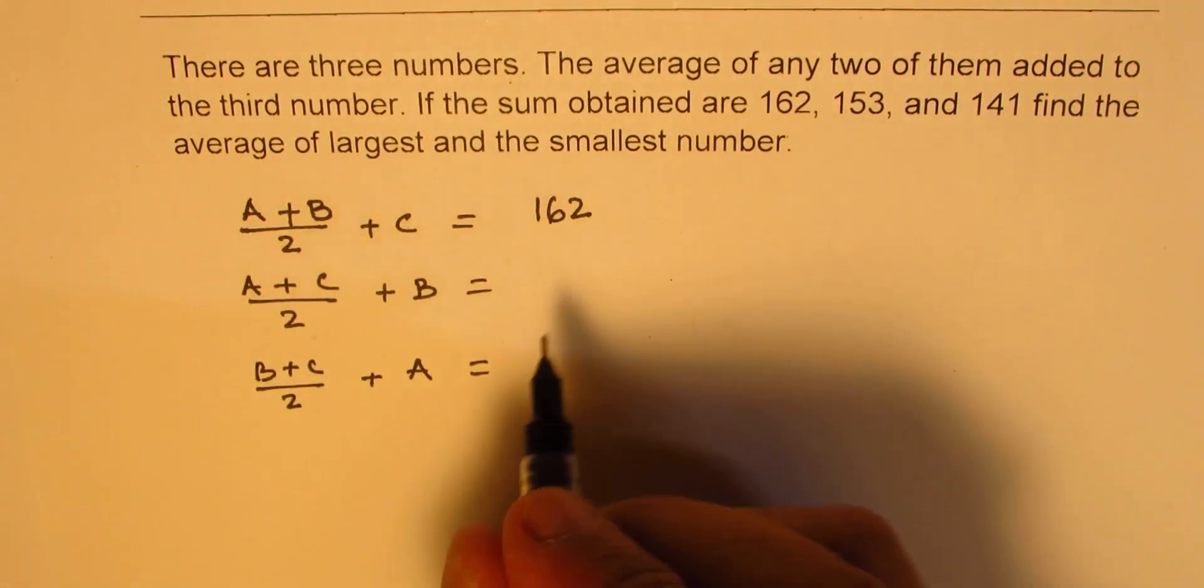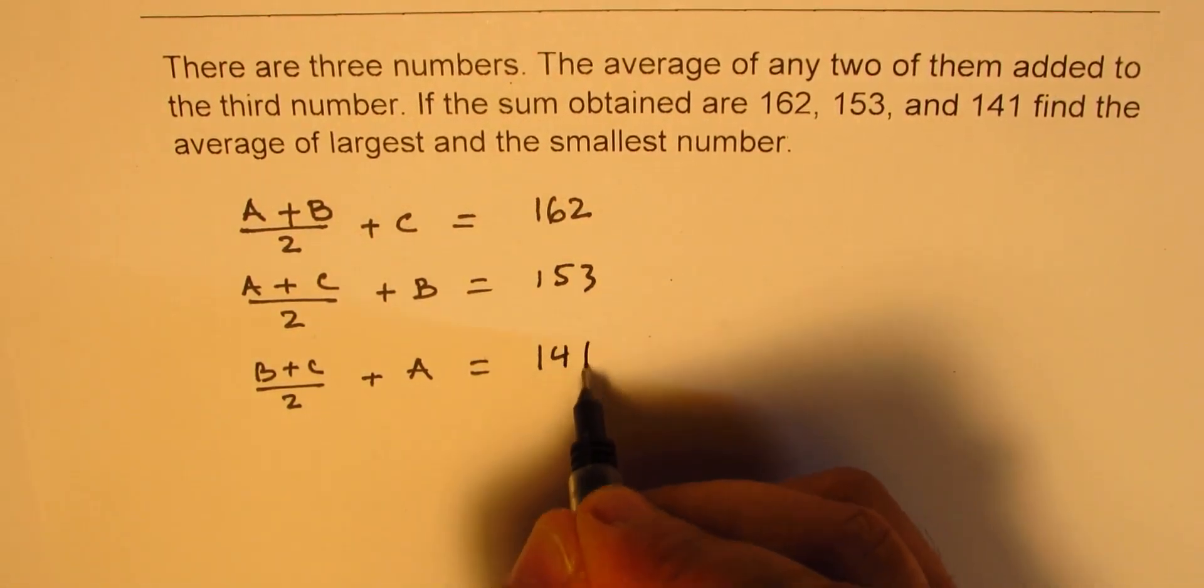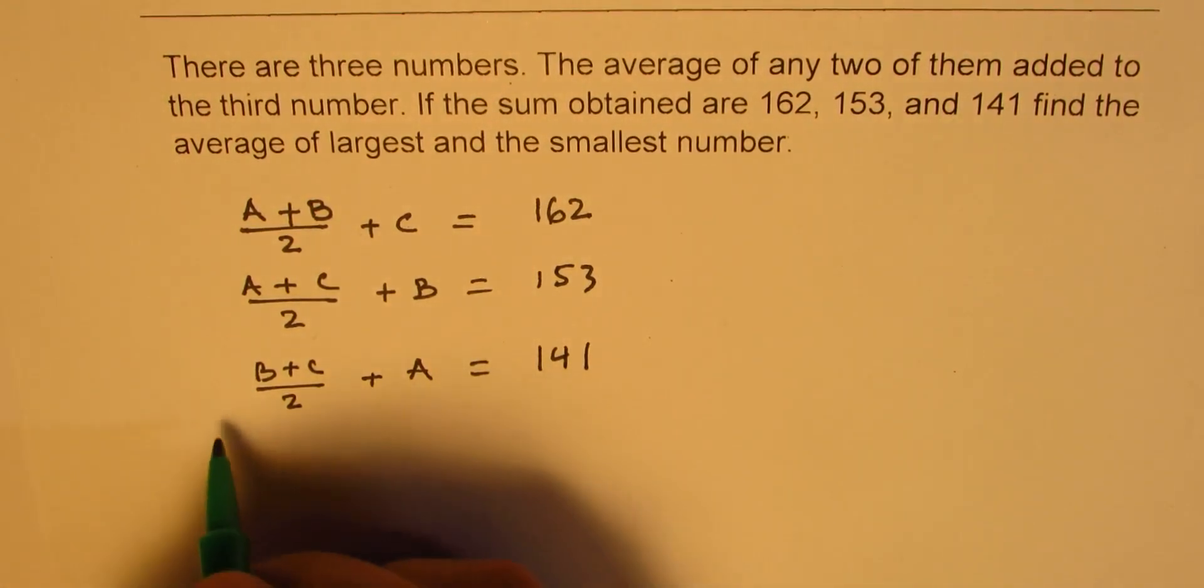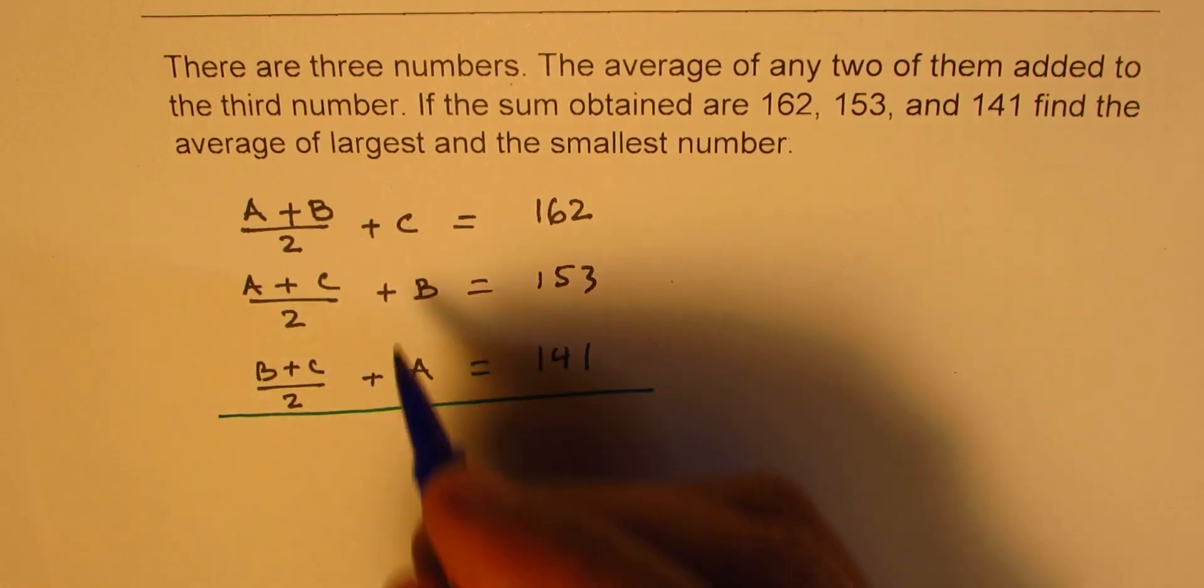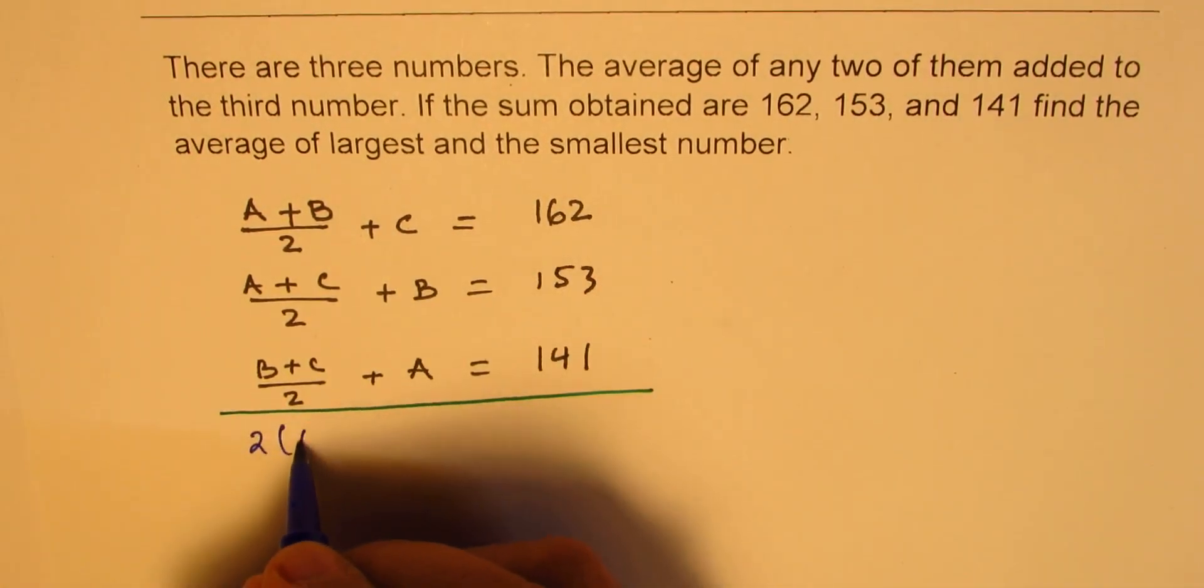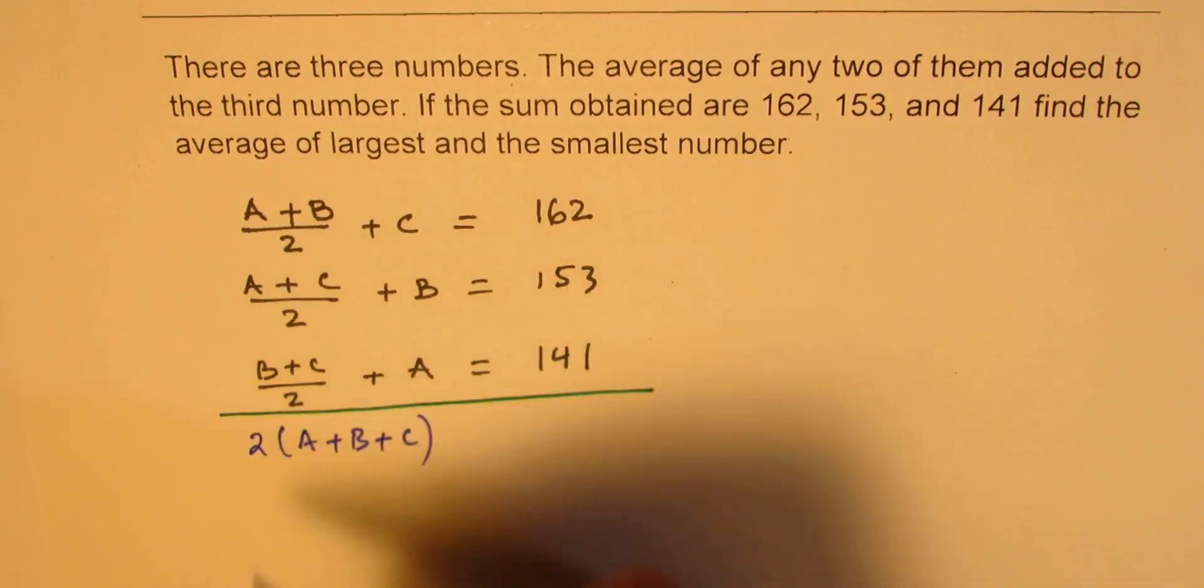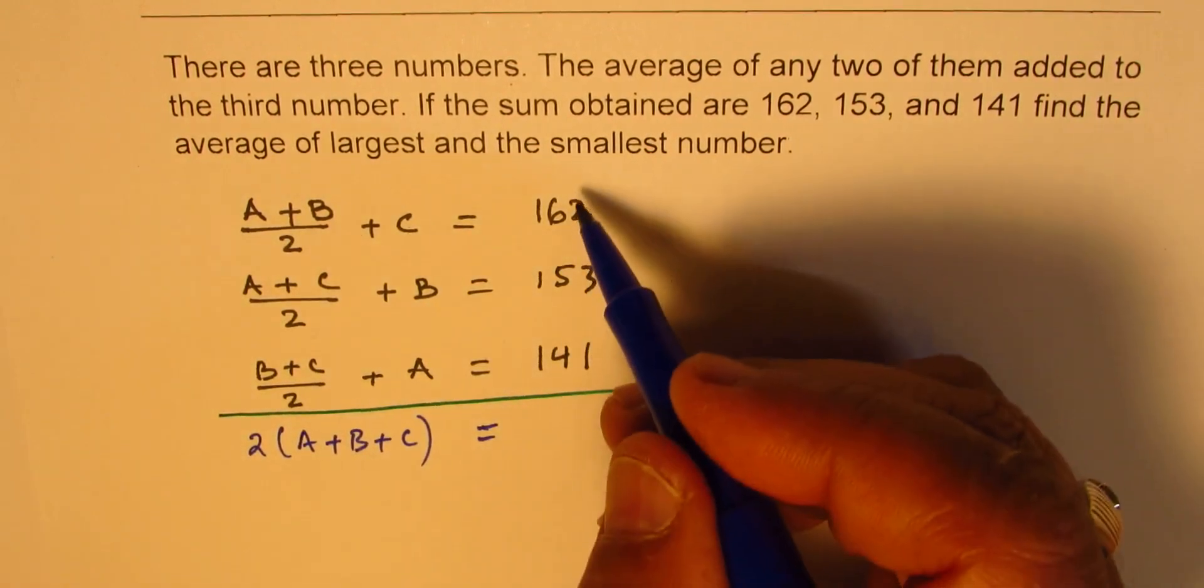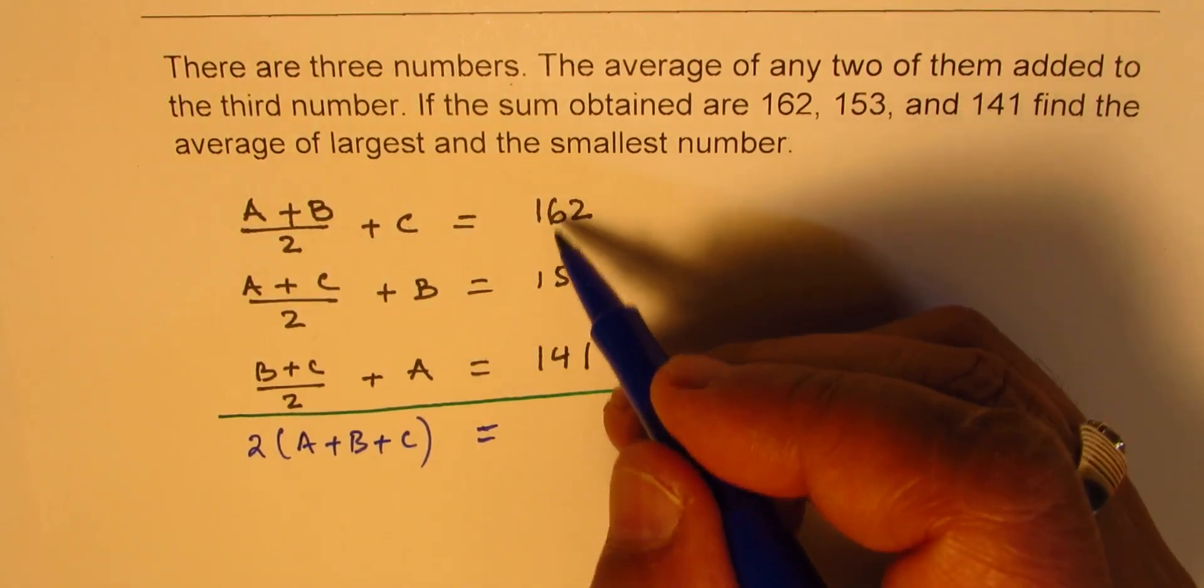You can now add them all. So when you add them all, what do you get? You get 2 times (A+B+C) - these are halves and halves becomes two. And here we get 2 plus 3 is 5, plus 1 as 6, 6 plus 4 is 10, and 5 is 15, and then 456.